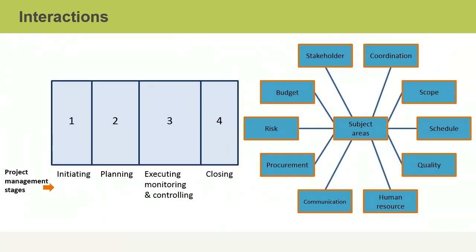As a project manager, you need to know the stages of a project and the best practices for applying each subject area. This is an example of how the subject areas may interact with the project management stages. During the initiating stage, the stakeholder subject area is active as you identify stakeholders and learn their expectations. During the planning stage, all subject areas are active as subsidiary plans are created to form an overall project management plan. During executing, project work begins and several subject areas are active as you staff the project and follow the necessary processes to create your end product, service, or result.